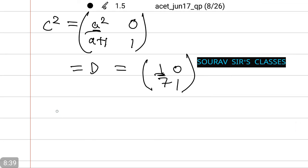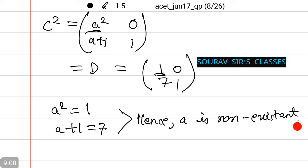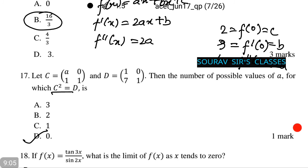Now let us equate this. Thus a plus 1 equals 7, which contradicts each other. Hence a is non-existent. That is option number D.